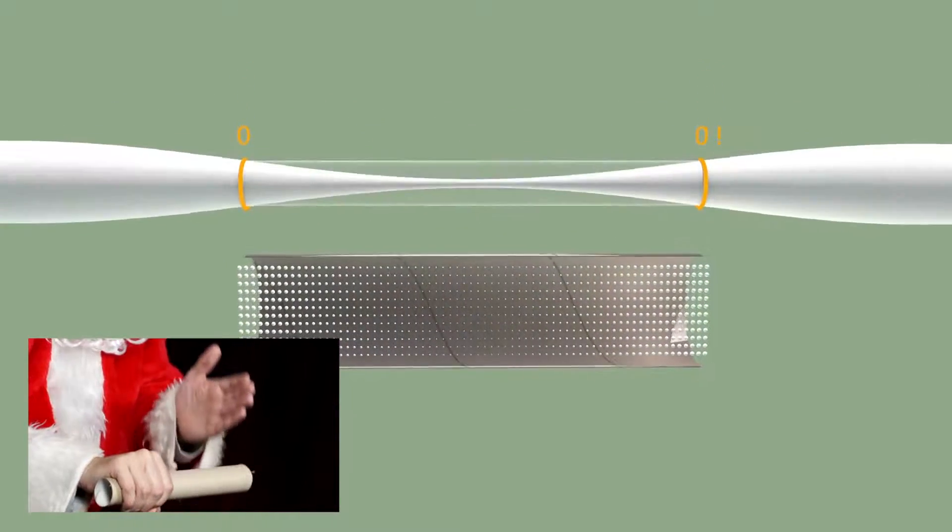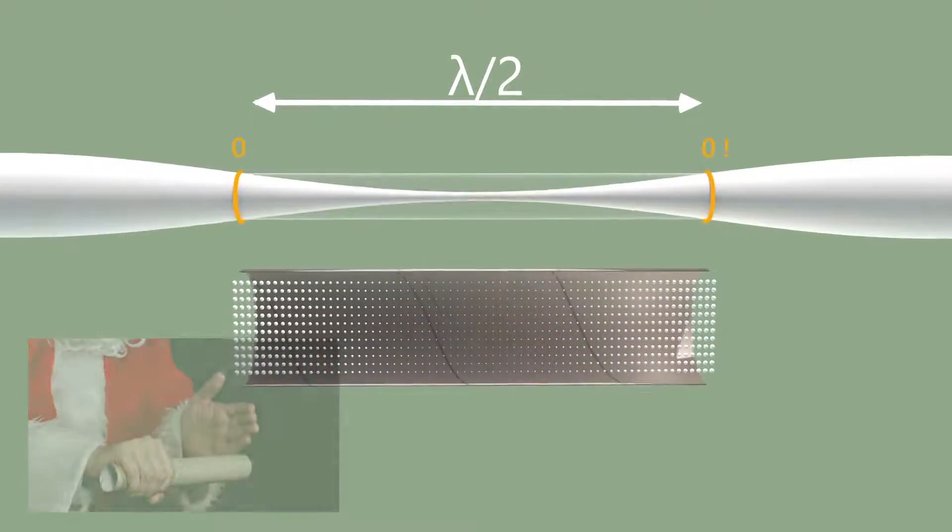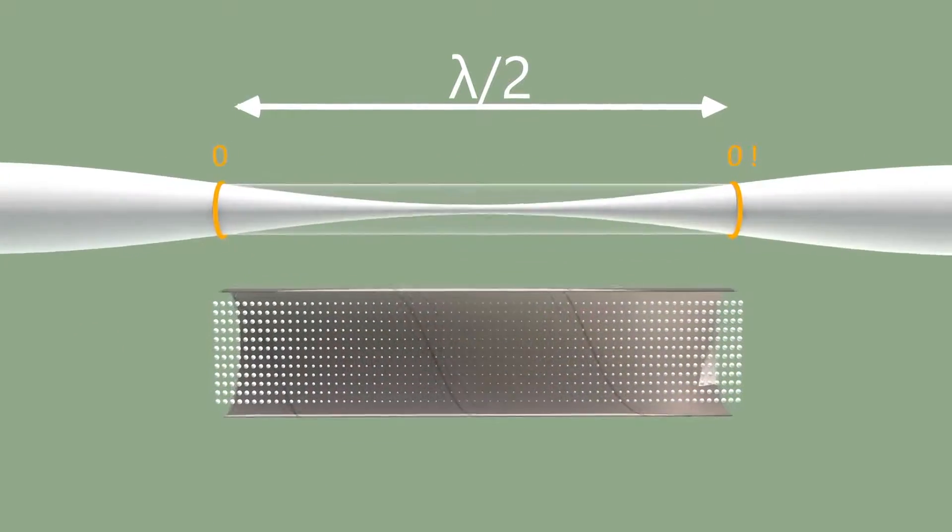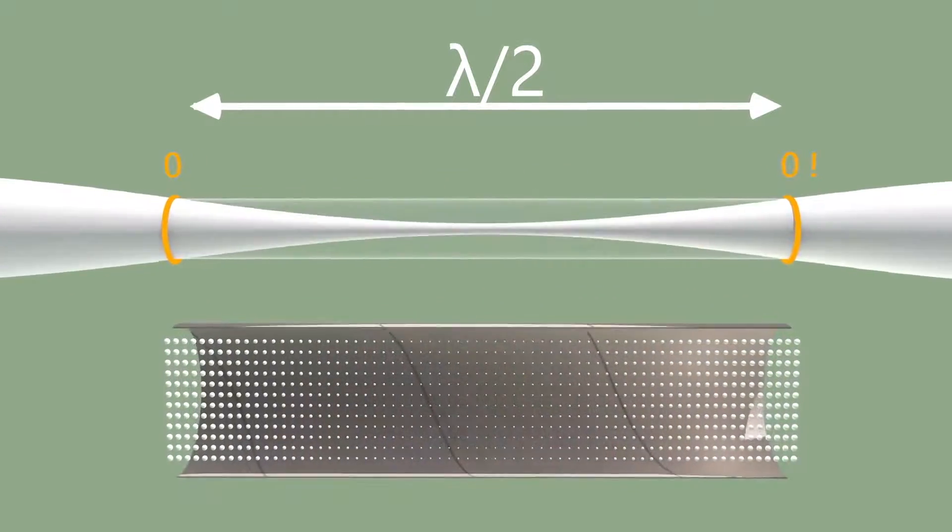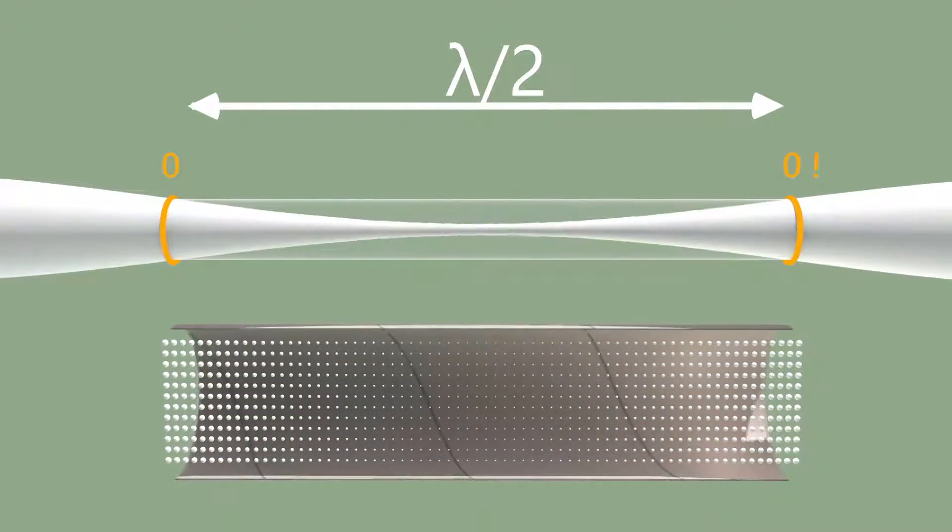The length of the tube is thus a half wavelength, lambda over two, and thus twice as large as in the first case. The pitch of the sound is exactly one octave higher.